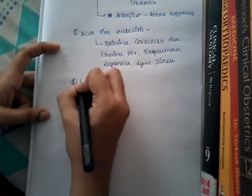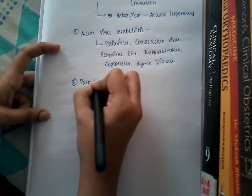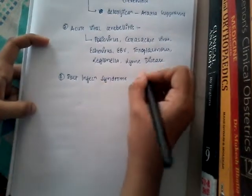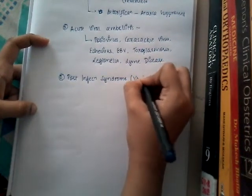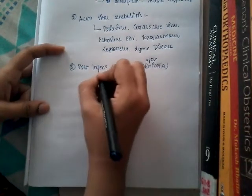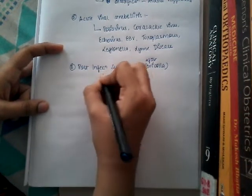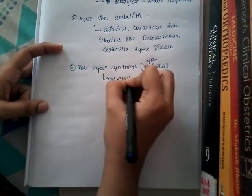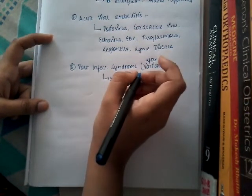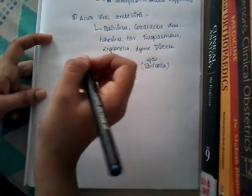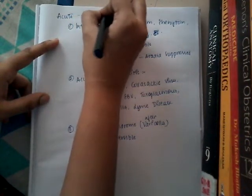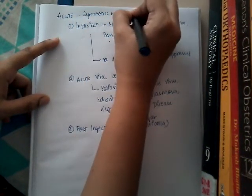Sometimes acute ataxia also occurs due to post-infection syndrome, mostly after varicella. Here the patient develops gait ataxia and dysarthria, and this is reversible. These are the major causes of acute symmetric and progressive cerebellar ataxia.